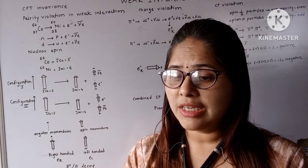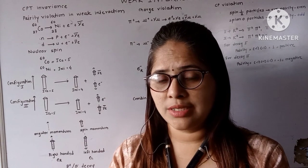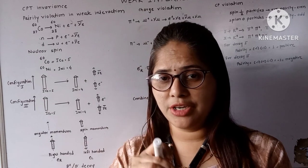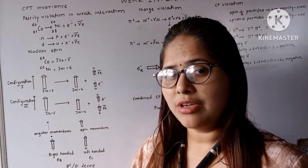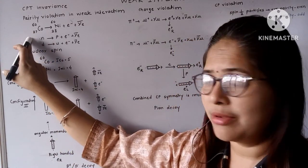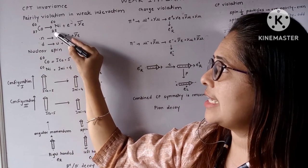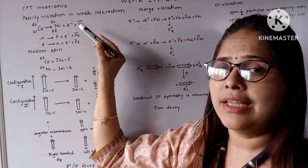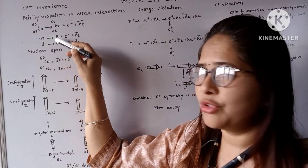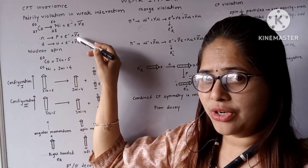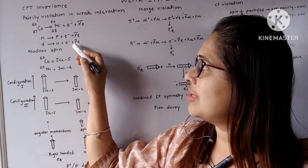Whenever there is an unstable heavier nucleus, it converts its proton to neutron or neutron to proton to attain stability. Such a process, in which a proton is converted to a neutron or a neutron to a proton by giving out an electron or positron along with neutrinos, is called beta-plus or beta-minus decay. We take the example of beta-minus decay: cobalt-60 (Z=27) decays to nickel-60 (Z=28) along with the emission of an electron and electron neutrino.